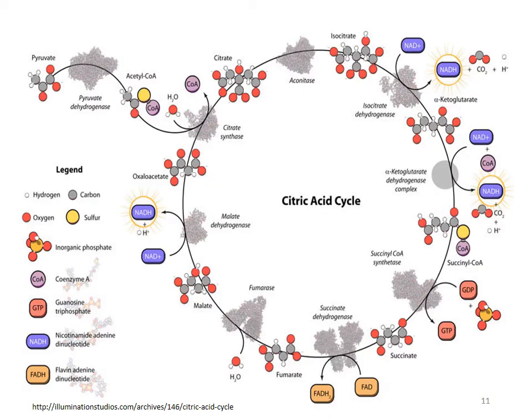Without needing to memorize the detailed intermediates, the big picture is that we're taking an organic acid, removing carbon dioxide and electrons, sticking those electrons onto coenzymes NAD and FAD to get NADH and FADH2, and also producing carbon dioxide and some ATP. Focus on the big picture of the citric acid cycle.